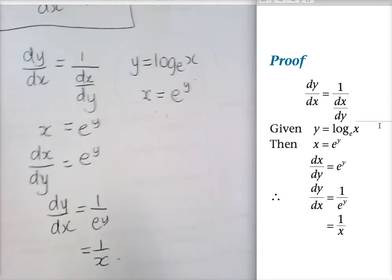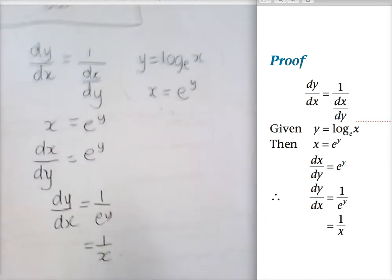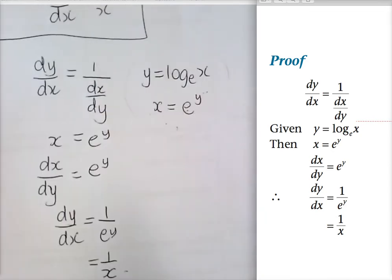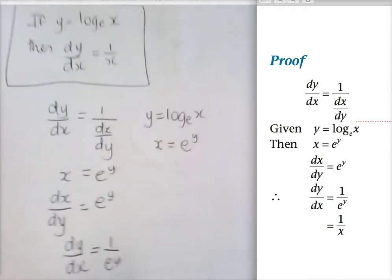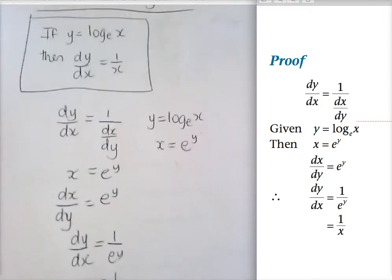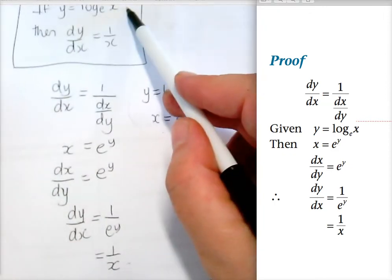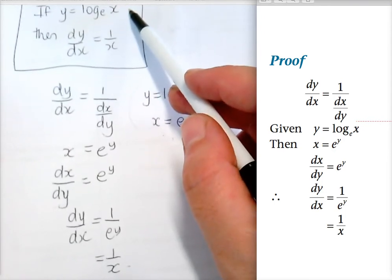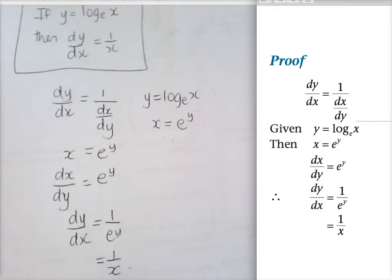You won't need to reproduce it. So all we need to know is the rule: if you differentiate ln x, you get 1 on x. The rule is: if y equals ln x — not log to the base 10, it's got to be ln x or log to the base e of x — then dy/dx is 1 on x. That's it.